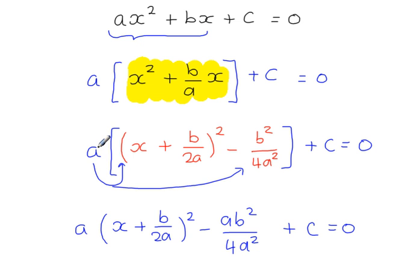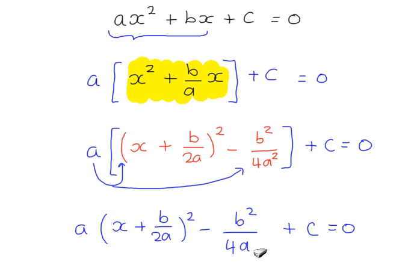So the a, when multiplied by this fraction, the a multiplies the numerator to give you a times b squared, like this. And then we can cancel the a from the top with one of the a's from the denominator. And that gives us this.